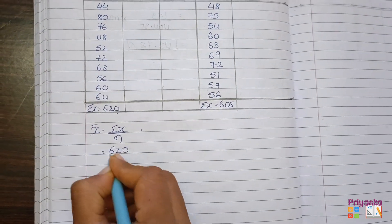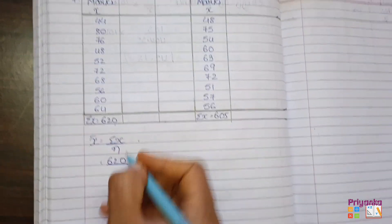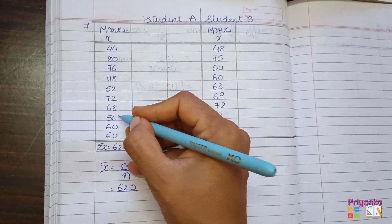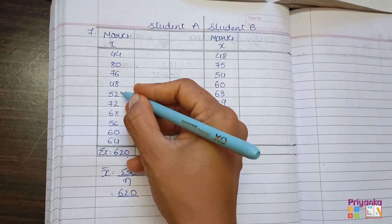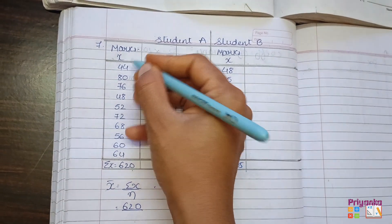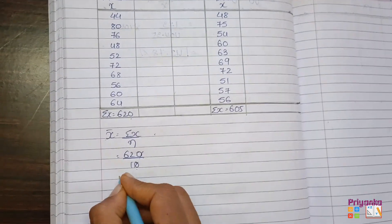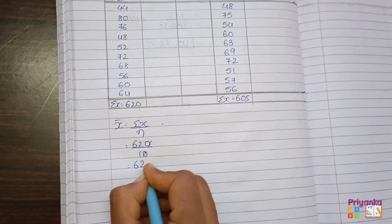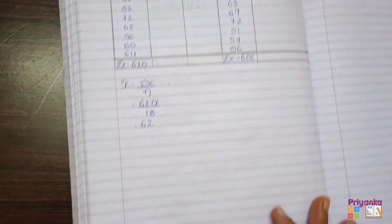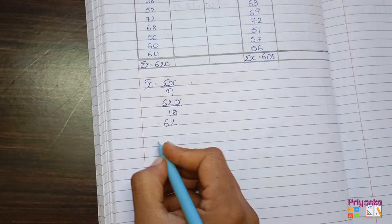We divide 620 by the number of observations, that is 10, and here we get the answer: mean is 62.